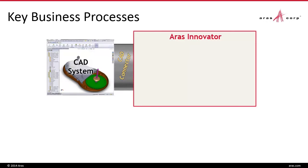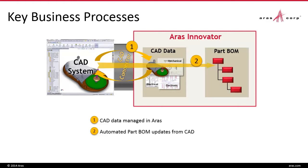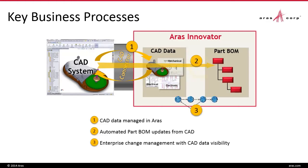There are three key business processes that are enabled by ARIS CAD Data Management. The first is simply to manage the CAD data in ARIS, with ARIS being the repository of the CAD files. The second is to automate part BOM updates from CAD. And the third is that the enterprise change management process has complete visibility for CAD data.